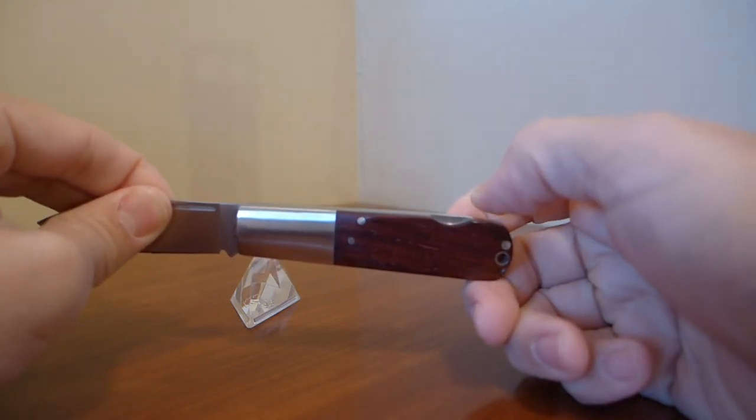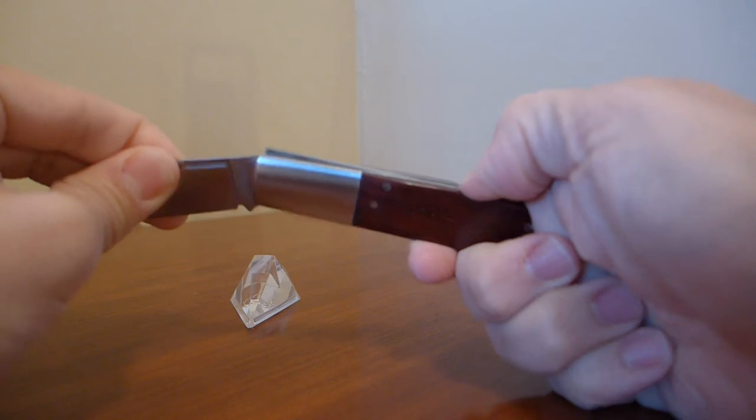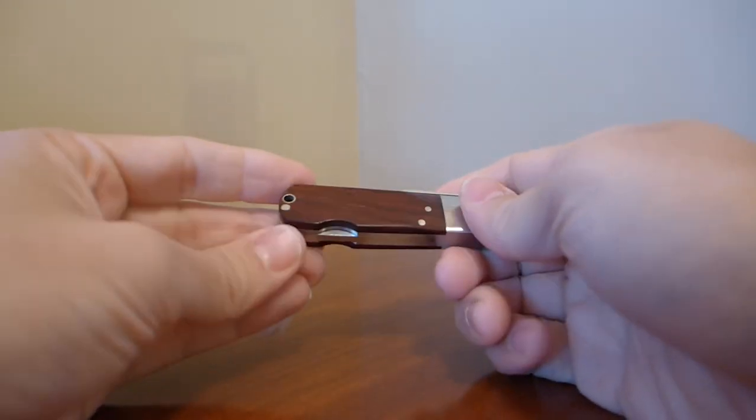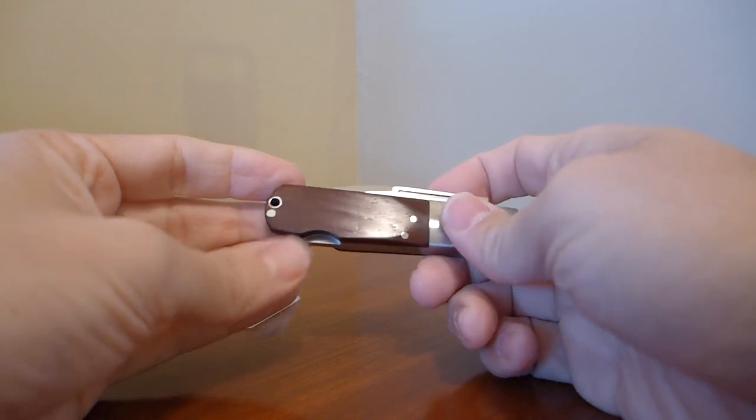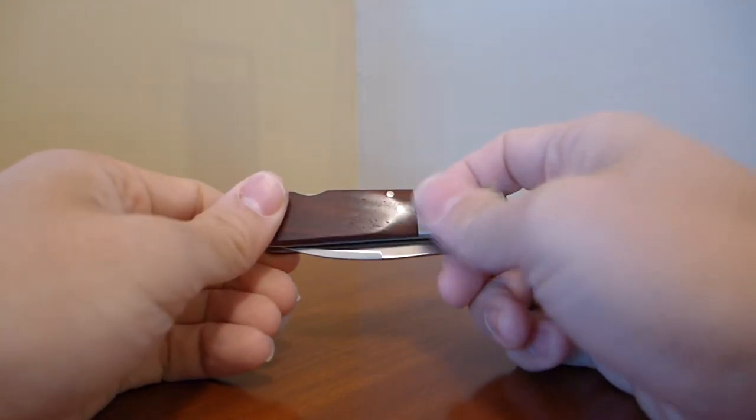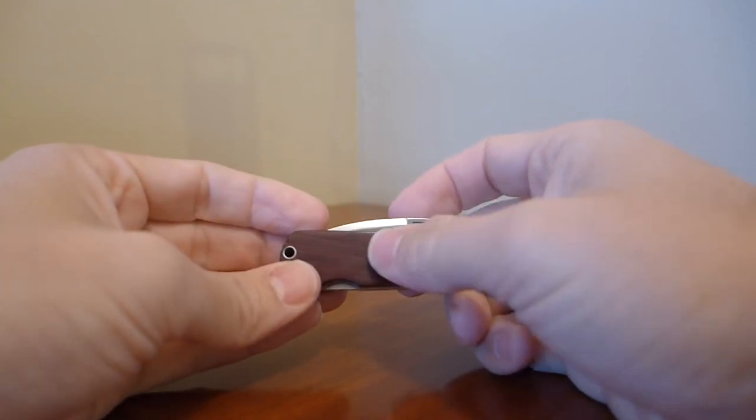Additionally, this particular Barlow has a lockback. Not all Barlows come with lockbacks, but A.G. Russell put a lockback on his. It is pin-constructed, as you can see. And the handle scales that are not bolster steel are Cocobolo.